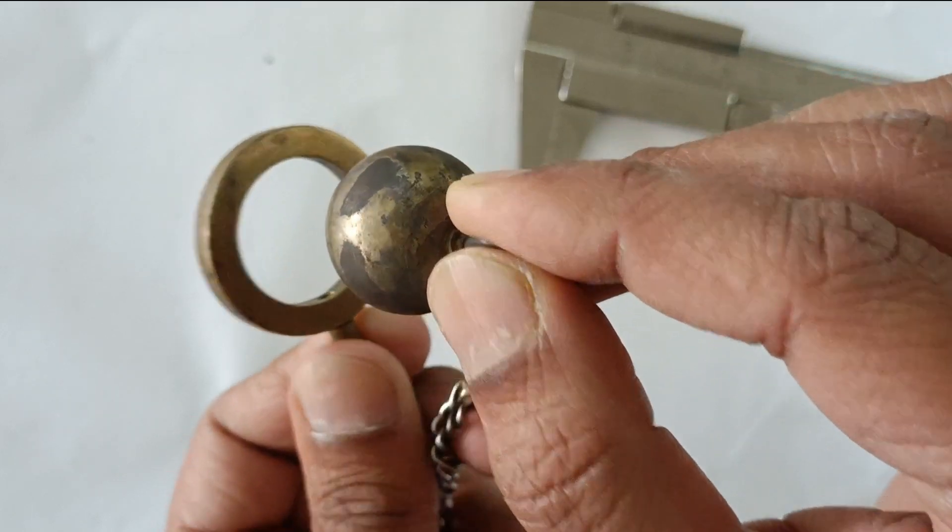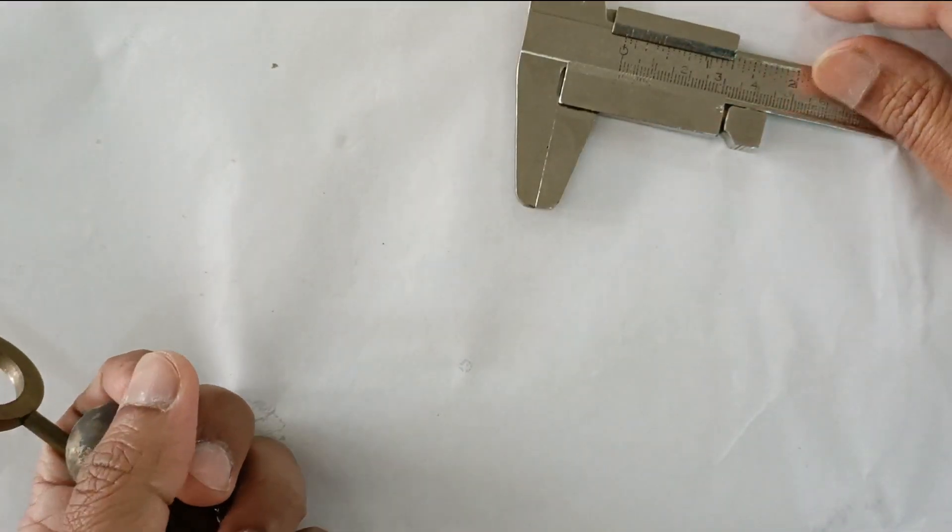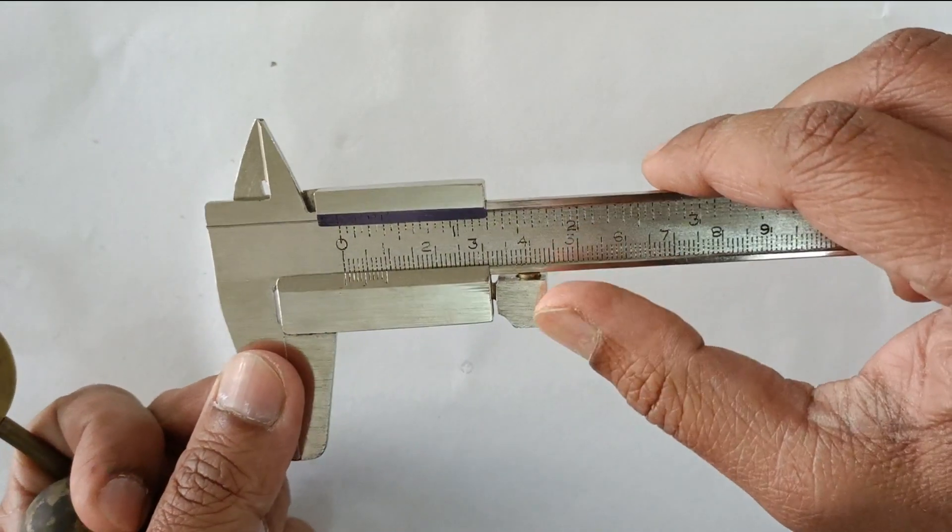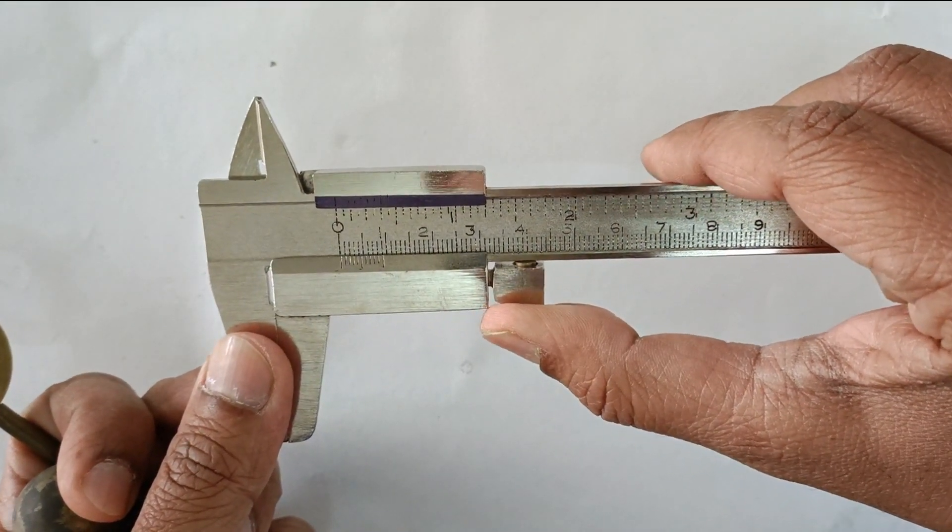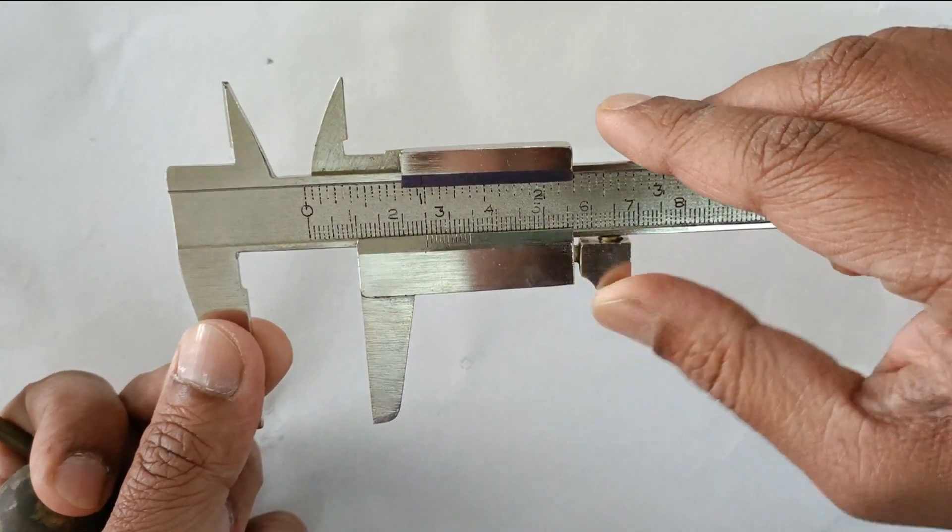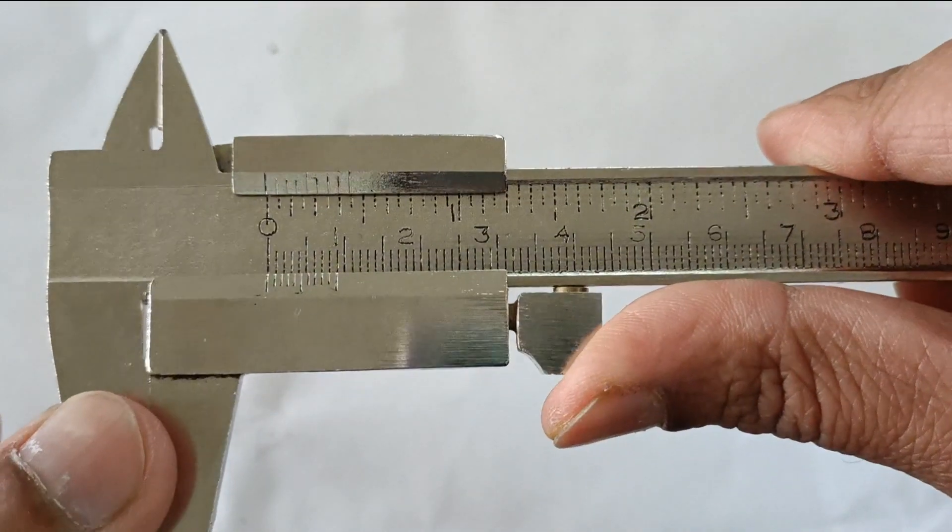...that the metal ball passes through the ring easily. Let's use a vernier calipers to measure its diameter. The vernier calipers used here is error-free.